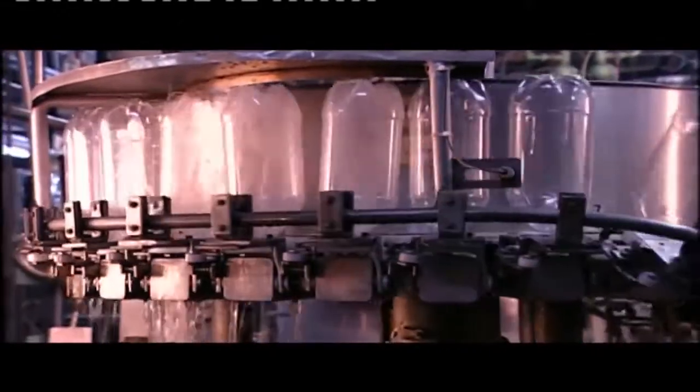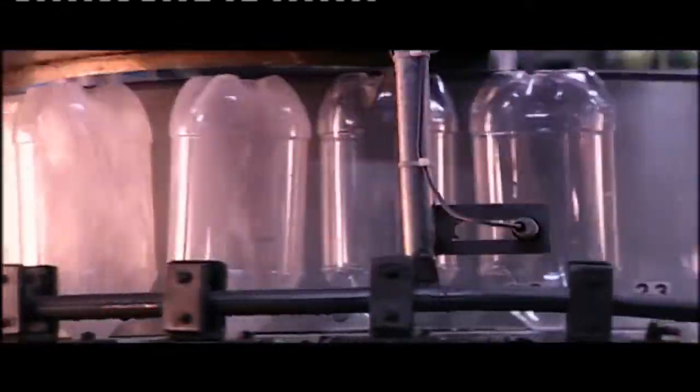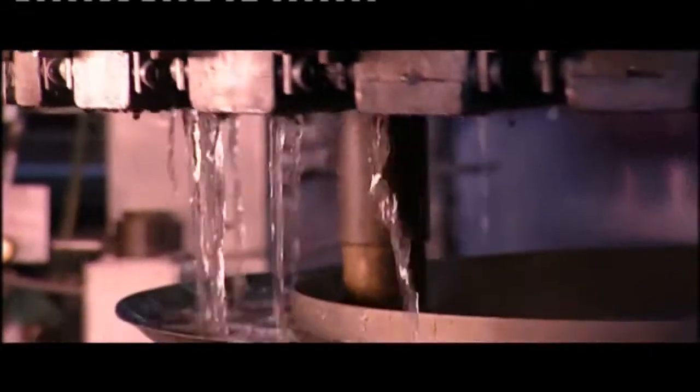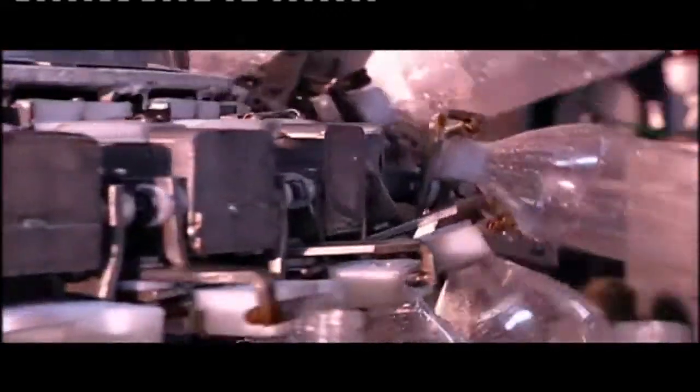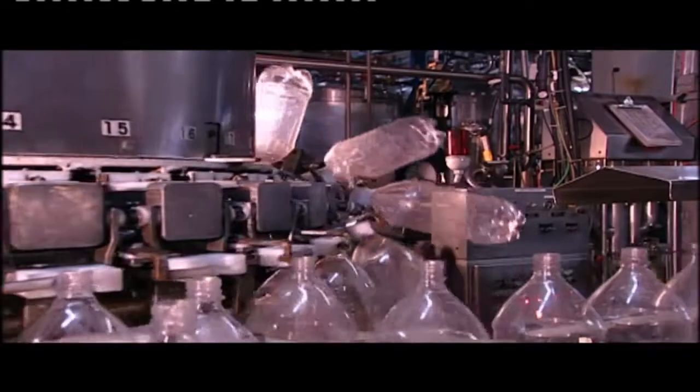This rinsing machine turns the bottles upside down, then flushes them with water the plant filters on site. Once the water drains out, the machines turn the bottles right side up again and they make their way to the filling station.